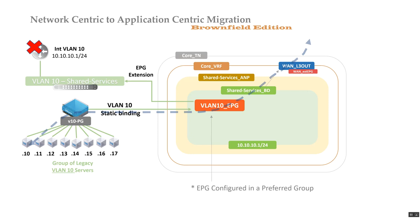There are also things happening behind the scenes. The WAN layer 3 out has a layer 3 connection into the legacy world and is advertising the 10.10.10.0/24 subnet in that direction. You will have layer 3 peering from your layer 3 out, advertising this new subnet through the WAN layer 3 out. It will no longer be advertised from interface VLAN 10 on the switch that was hosting it. If you're doing route summaries, you have to factor that in. There will be a new ingress/egress point for the 10.10.10.0/24 subnet.